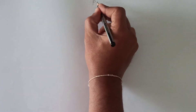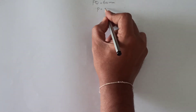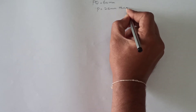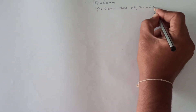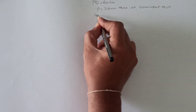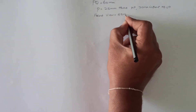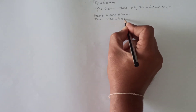In the problem, the line is not given directly, so we will be considering the line as PQ. The length of the line is 60 mm and the point is 25 mm above HP and 20 mm in front of VP. The front view of the line measures 55 mm and the top view of the line measures 45 mm.